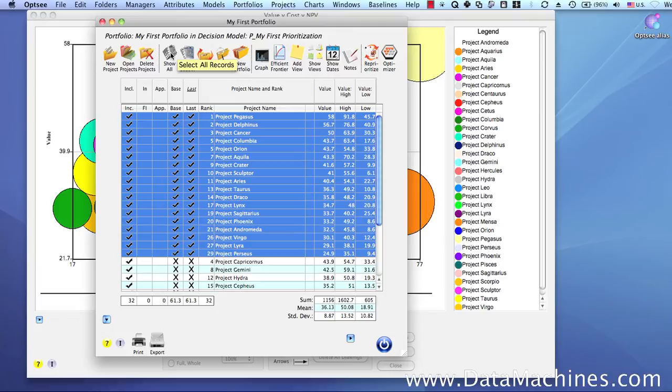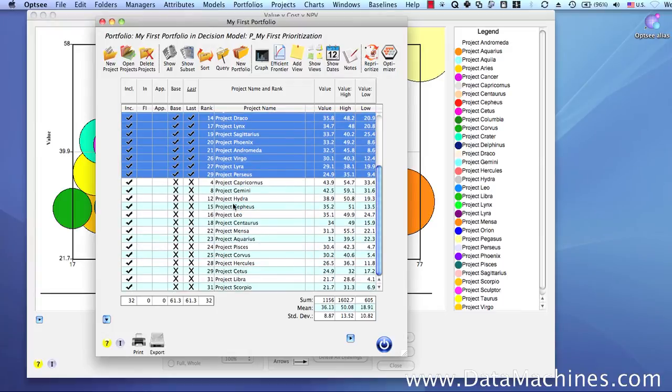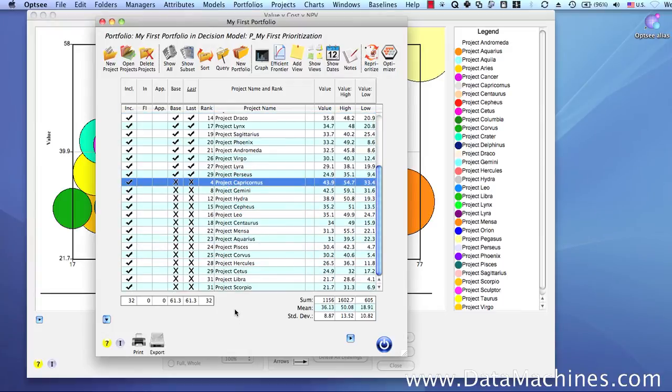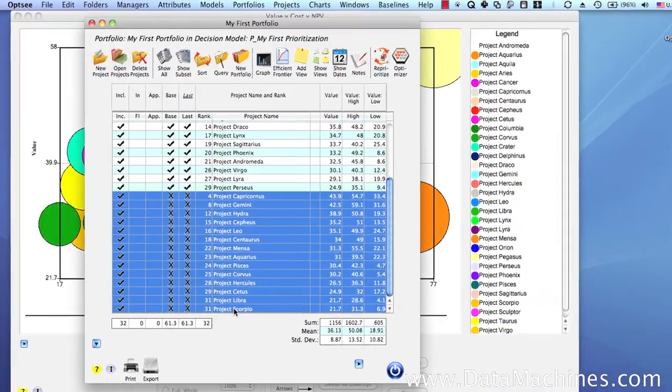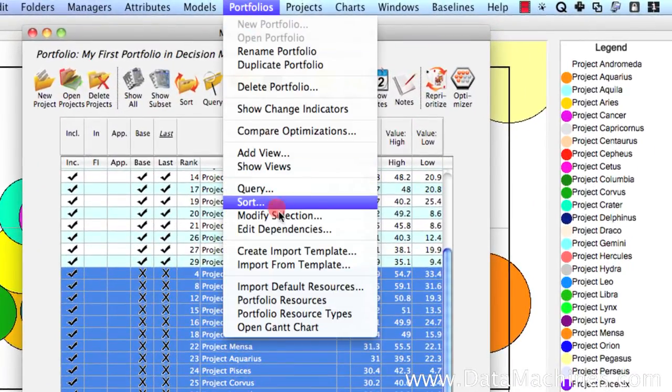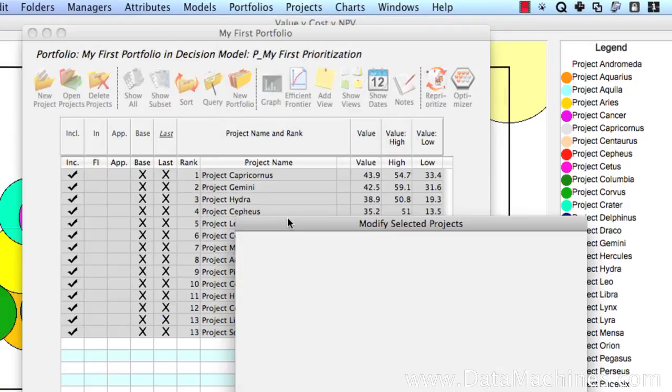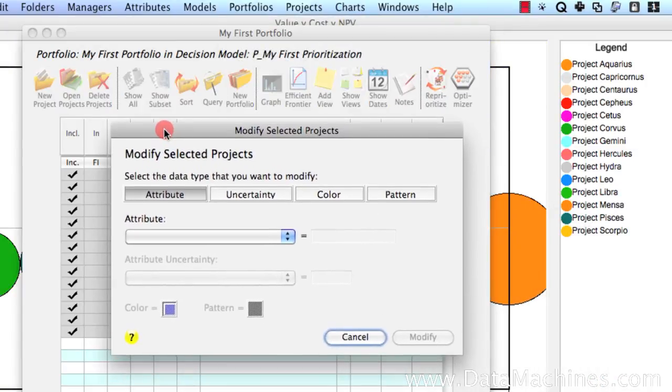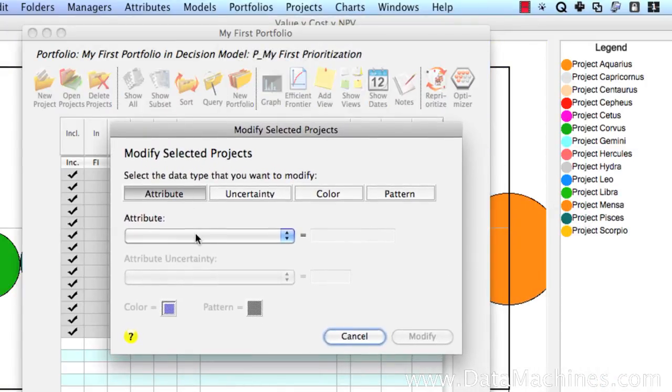Let's select Show All to display all the projects again. And this time, we're going to select the projects that were rejected in the optimization. Then we're going to use the Modified Selection menu item to open the Modified Selection form. This form allows us to modify subsets of projects at one time so we can modify attribute values, uncertainty values, colors, and patterns.